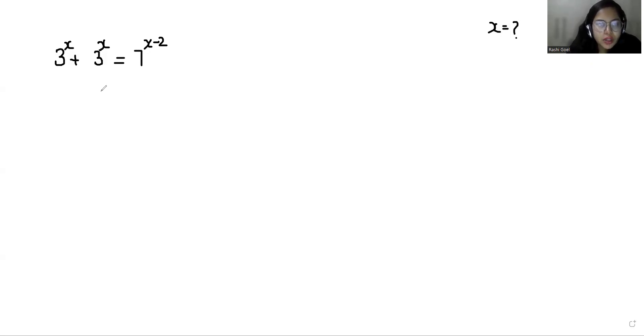So let's start with today's video solution. If I take 3 power x as common, it becomes 1 plus 1, 7 power x minus 2. So 3 power x times 2 equals, according to exponent rule x power m minus n we can write it as x power m by x power n.